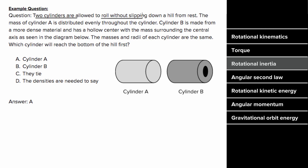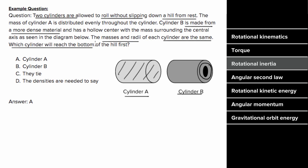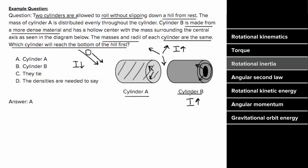What does an example problem involving rotational inertia look like? Two cylinders roll without slipping from rest down a hill. Cylinder A has mass distributed evenly throughout; cylinder B is made of denser material with a hollow center, mass distributed around that hollow center. If the masses and radii are the same, which reaches the bottom first? The cylinder with the least moment of inertia rotates more easily and rolls down faster. Since cylinder B has mass distributed farther from the axis, it has a larger moment of inertia, is harder to rotate, and cylinder A wins.